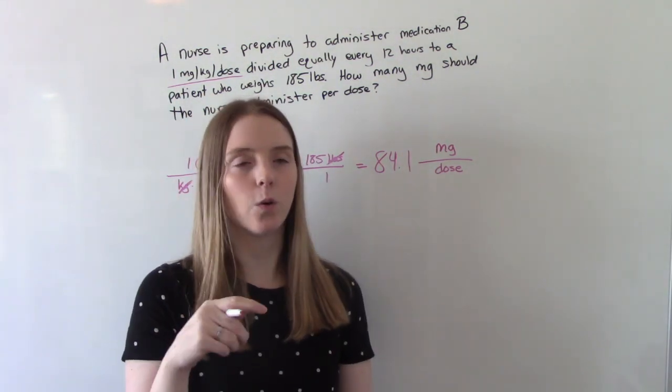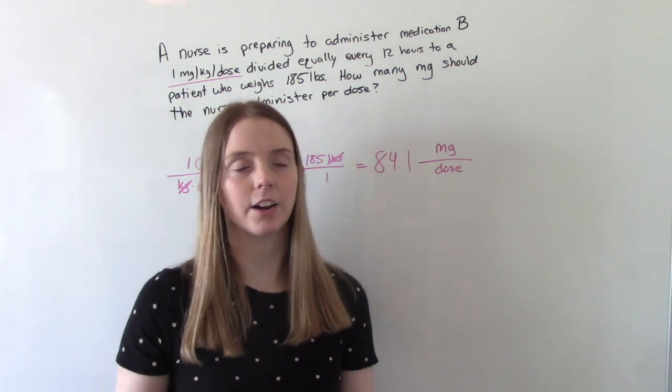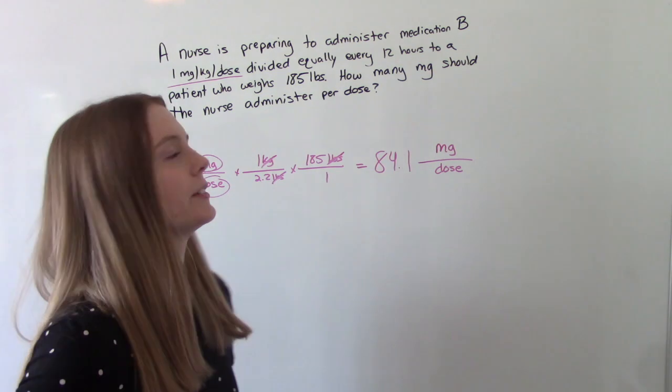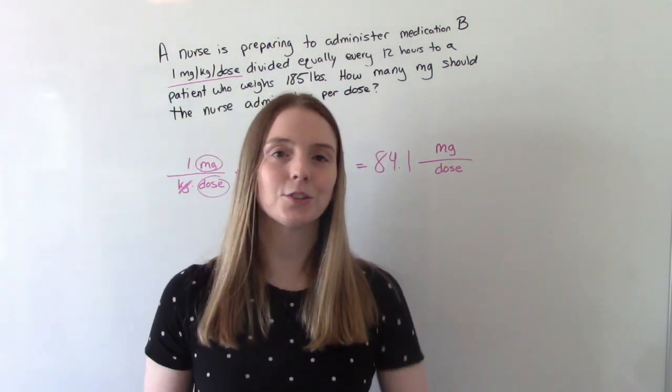We get like 84.09, et cetera, but we're going to round it. So 84.1 mg per dose is our answer. Let's try another one.